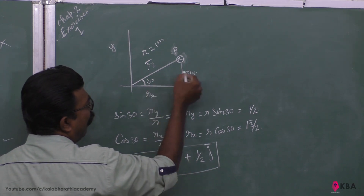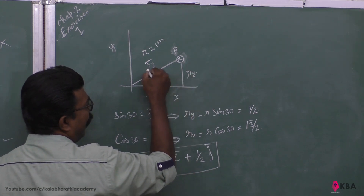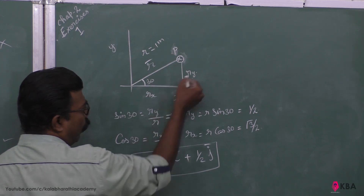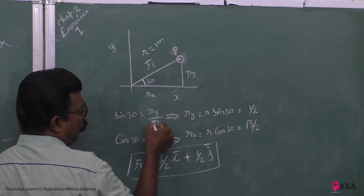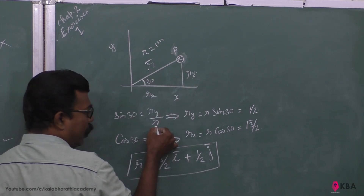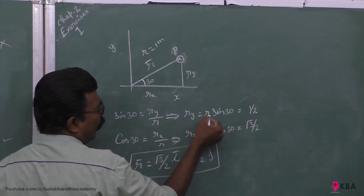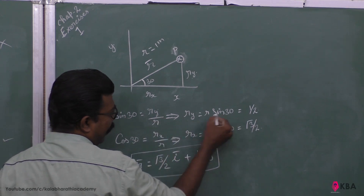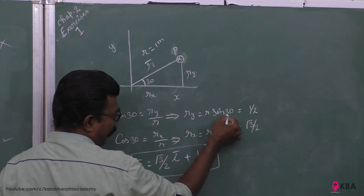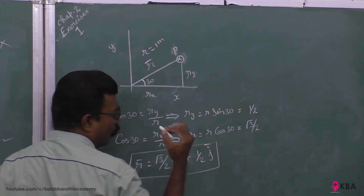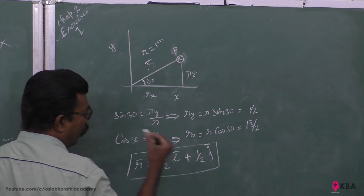sin30 is opposite side by hypotenuse — opposite is ry, hypotenuse is r. So ry is equal to r·sin30, that is 1·sin30. sin30 is 1/2, so ry is 1/2.